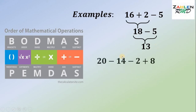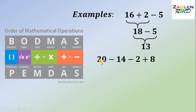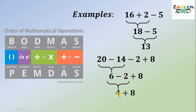What if we have: 20 minus 14 minus 2 plus 8? We do addition or subtraction from left to right. Starting from the left: 20 minus 14 gives us 6, then bring down minus 2 plus 8. Next, 6 minus 2 gives us 4. Finally, 4 plus 8 gives us 12. Therefore, the answer to 20 minus 14 minus 2 plus 8 is 12.